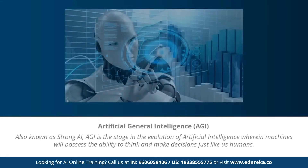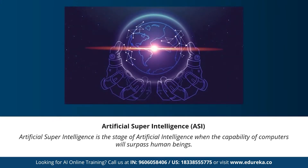Next we have artificial general intelligence, also known as strong AI. This stage is the evolution of artificial intelligence wherein machines will possess the ability to think and make decisions just like human beings. There are currently no existing examples of strong AI, but it's believed that we will soon be able to create machines that are as smart as humans. Strong AI is actually considered a threat to human existence by many scientists, including Stephen Hawking, who quoted that the development of full artificial intelligence could spell the end of the human race.